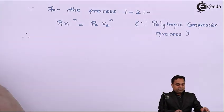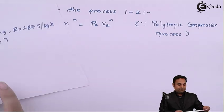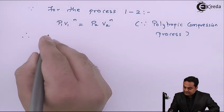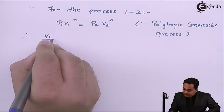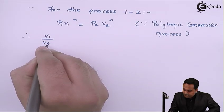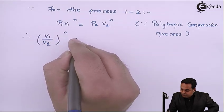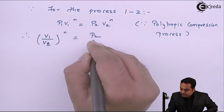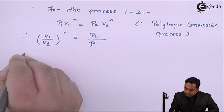So therefore, we have the values of P2 as well as P1. I'll write the relation in this way: (V1/V2)^n is equal to P2 divided by P1.